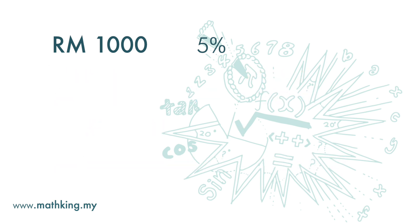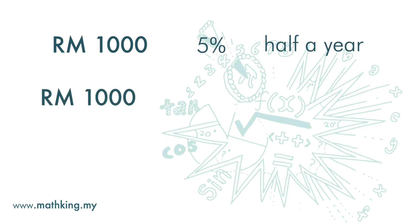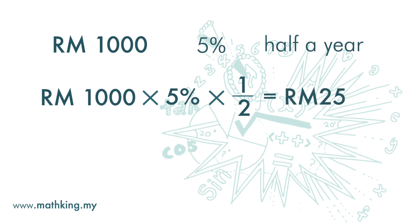How much interest will you get after half a year? Again, we will take the principal of 1,000 and multiply it by interest rate of 5%. But this time, we only have half a year, so we are going to multiply this whole thing by 1 over 2. And we get RM25.